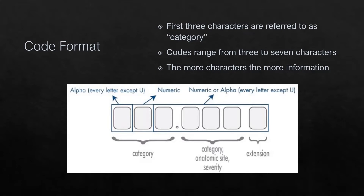Code format. The ICD-10-CM code format is based on a possible length of 7 characters total. This does not mean that each code has 7 characters. ICD-10-CM codes range from 3 to 7 characters, and the first 3 characters of an ICD-10-CM code are referred to as the category. Codes that start with the same 3 characters are within the same category. For example, category I-11 stands for hypertensive heart disease, so each code that starts with I-11 is a type of hypertensive heart disease.